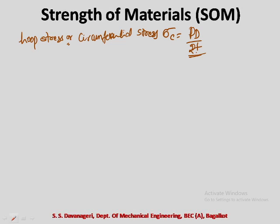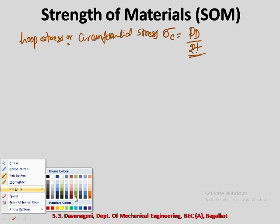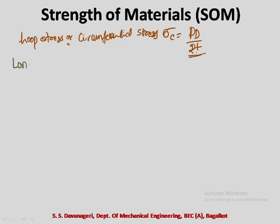Next, we go for longitudinal stress, denoted sigma l. Different books use different notations — some use small fl, some f1 or f2. If we consider a transverse section perpendicular to the axis of the cylinder and the cylinder bursts along its length in that direction, you get truncated or open cylinders.